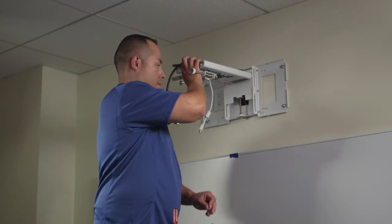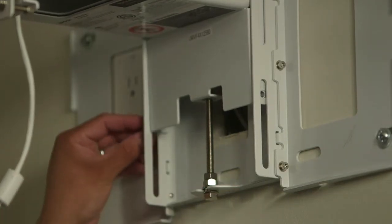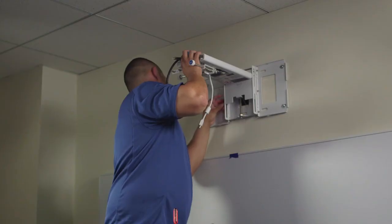Using four screws and washers from the hardware bag, secure the arm to the wall plate using two screws on each side.